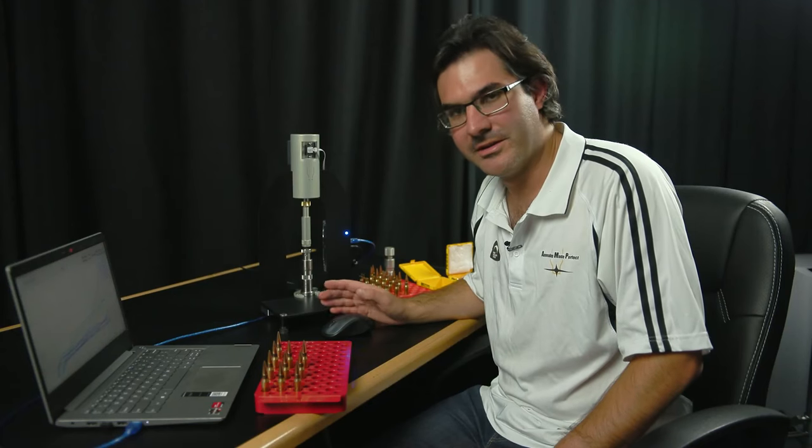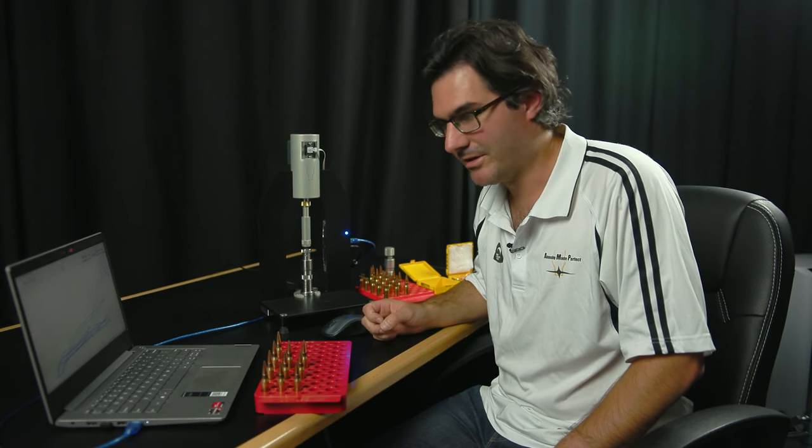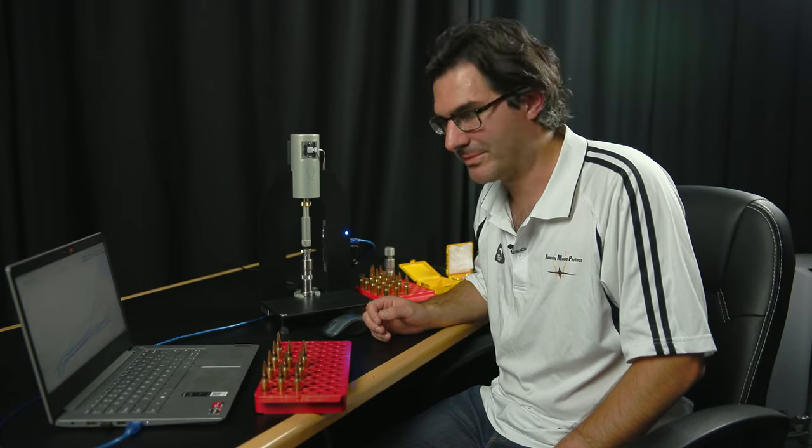Just to point out, the position sensor on the AMP press is accurate to a thousandths of an inch. It'll very easily highlight discrepancies with trimming to length.